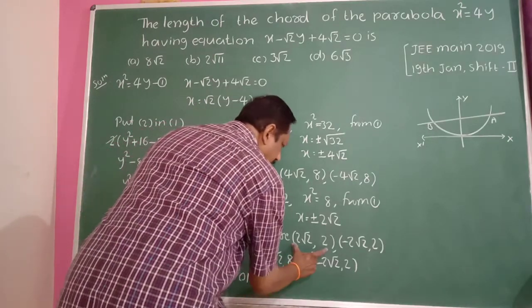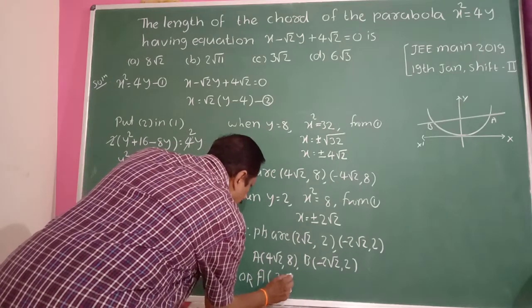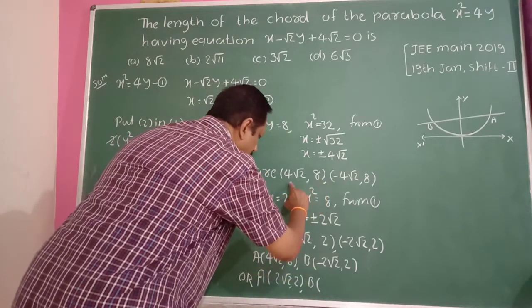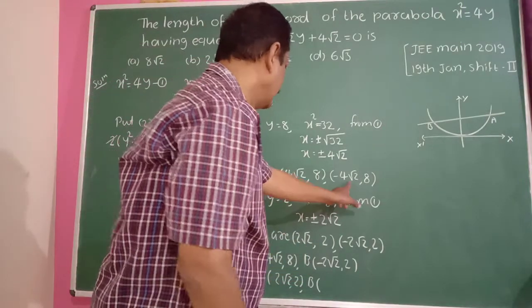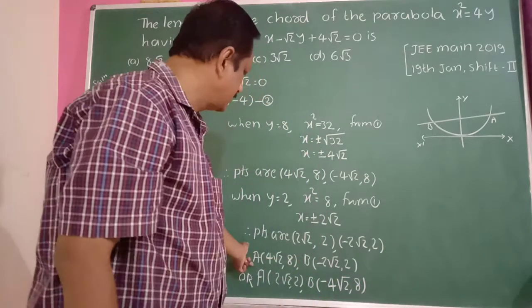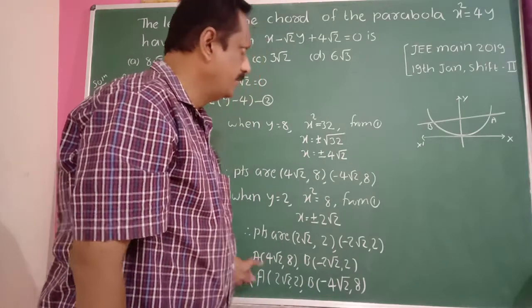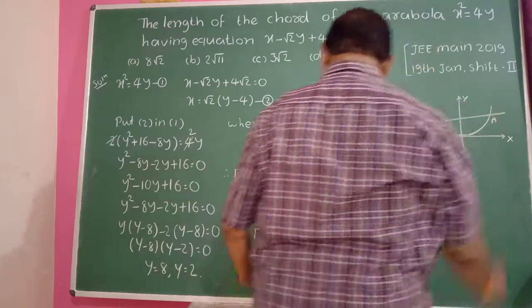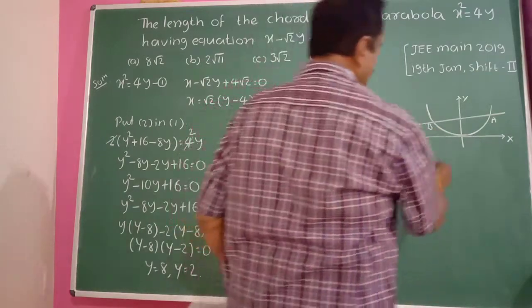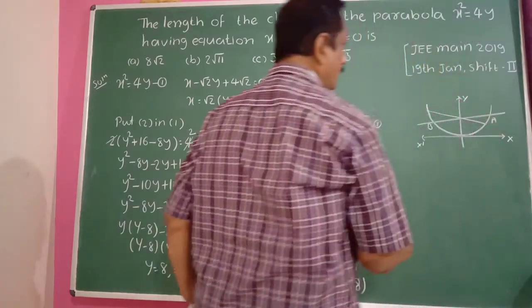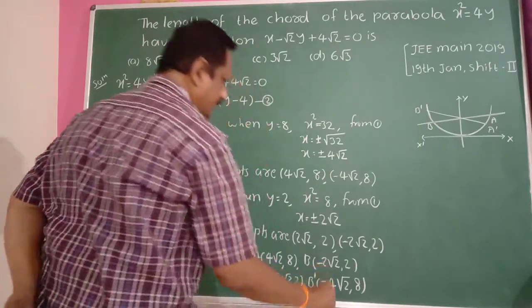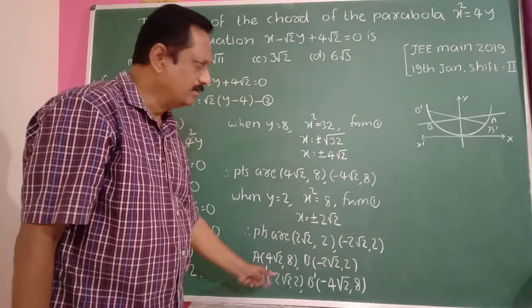Either combination is possible: A = (4√2, 8) and B = (−2√2, 2), or we can label them A' and B' the other way. Either choice gives the same answer, so take A = (4√2, 8) and B = (−2√2, 2).